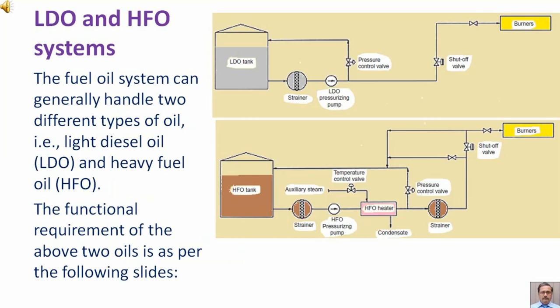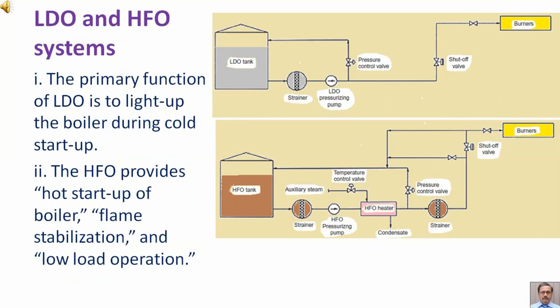The fuel oil system can generally handle two different types of oil: light diesel oil, also called LDO, and heavy fuel oil, also called HFO. The primary function of LDO is to light up the boiler during cold startup. HFO provides hot startup of the boiler, flame stabilization, and low load operation.